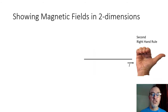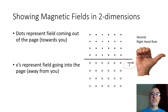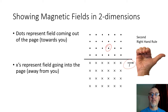Now, it's sometimes easier to show the magnetic field in two dimensions, where we're only dealing with the plane of the paper. What we're going to do is use dots representing the field coming out of the page towards you, and then we're going to use X's to represent the field going into the page away from you. This is taking just the plane of the page and showing that the magnetic field is coming towards you above the wire and going away from you below the wire if the current is running to the right, according to the first right-hand rule.